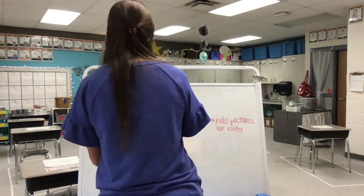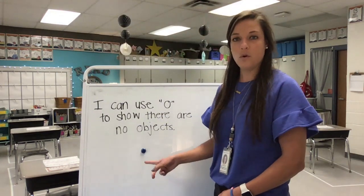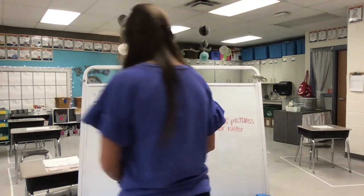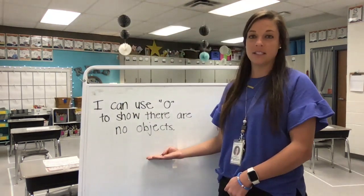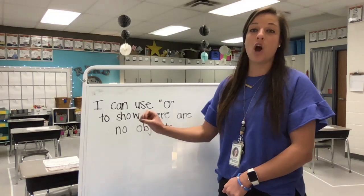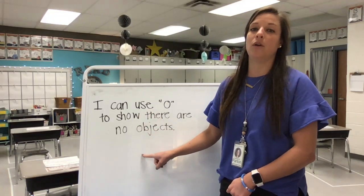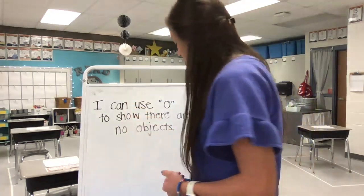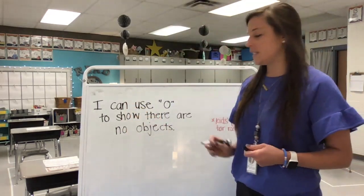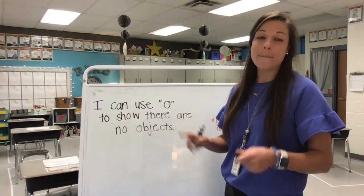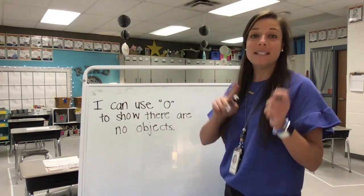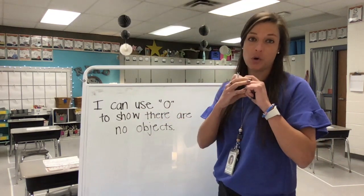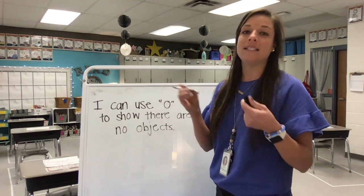Now let's count how many I have. Oh, I just have one. Now how many magnets do you see? Zero — there are no magnets here. The number zero represents nothing. Our zero looks like the letter O, but it's a number, it's a zero. Some friends sometimes get it confused with the shape of a circle, but since it's a number, we call it a zero.